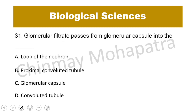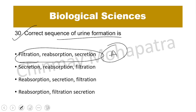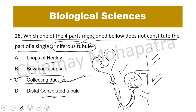Question number 31: Glomerular filtrate passes from the glomerular capsule — which is the Bowman's capsule — into the proximal convoluted tubule (PCT), then the distal convoluted tubule (DCT).